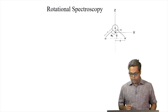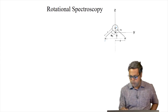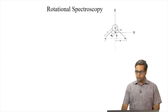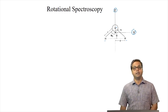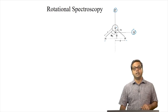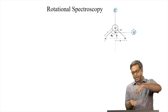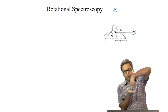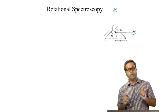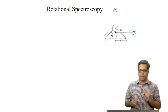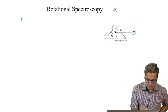Here we have the water molecule. This is the oxygen atom and these are the two hydrogen atoms. Here we see the Z axis and the Y axis; the X axis is out of the plane of the water molecule. Now, we can calculate the moment of inertia along the different axes. Let us start with the Z axis — we will calculate I_Z.